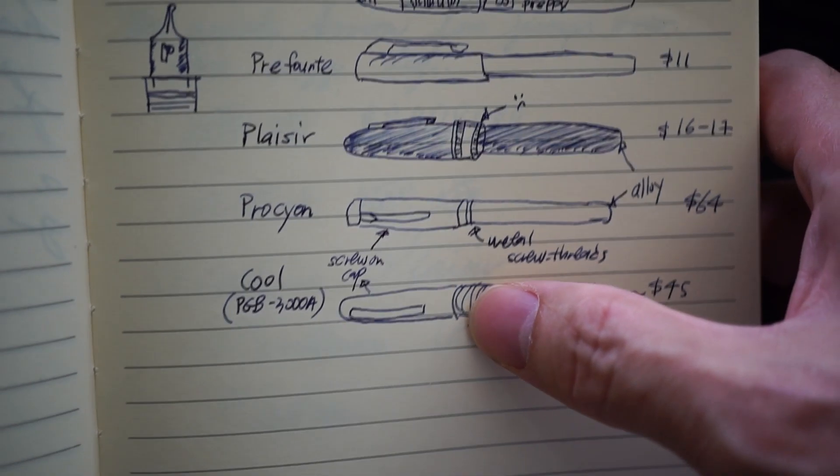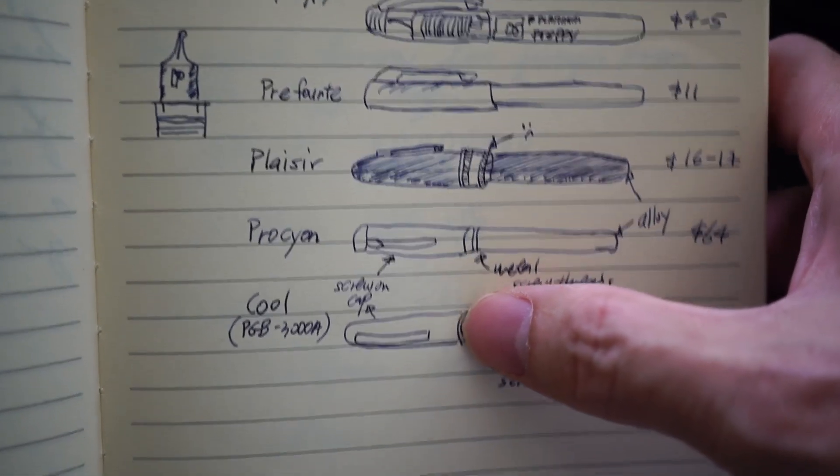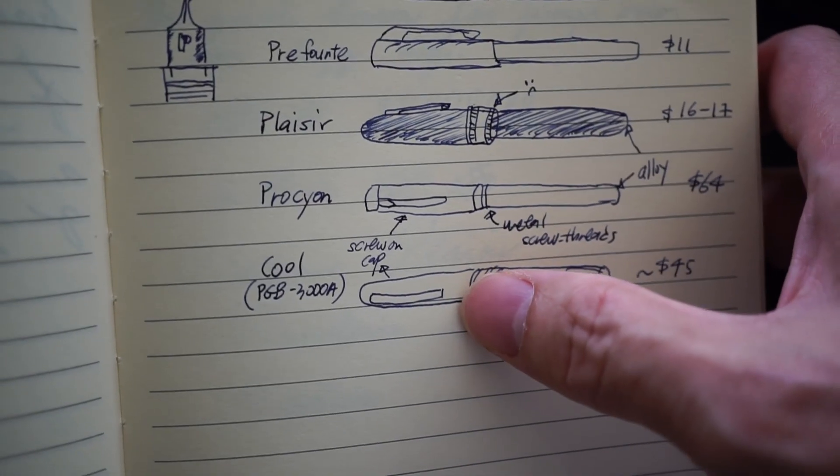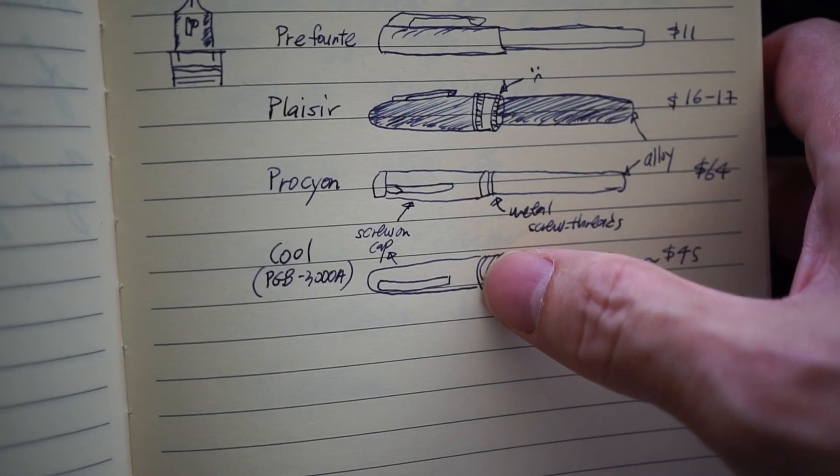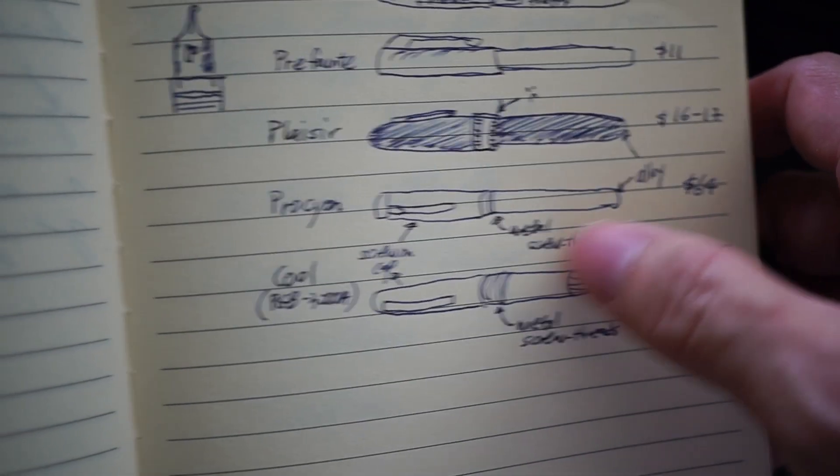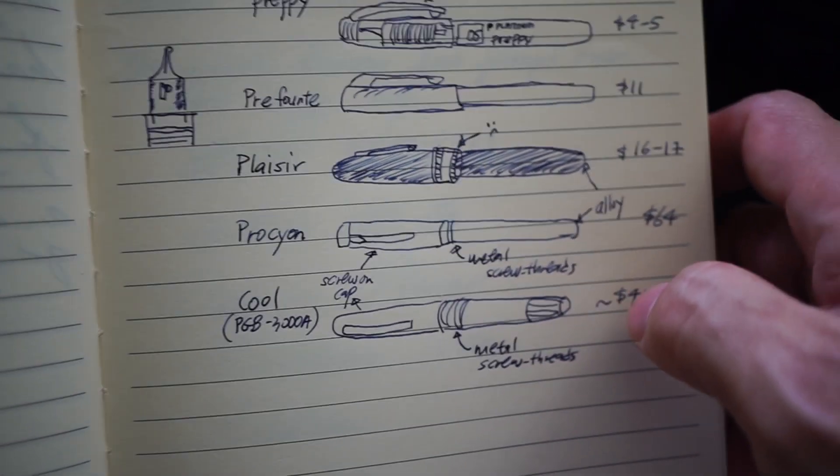And then we have the Cool which has, out of all these pens, it has the most elaborately designed section area with a little grip ring, sorry, a little silver or chrome ring at the end near the nib. You can kind of Google the Cool to kind of take a look at that.